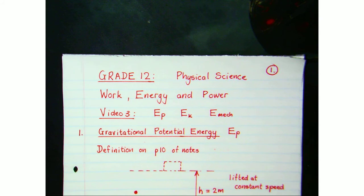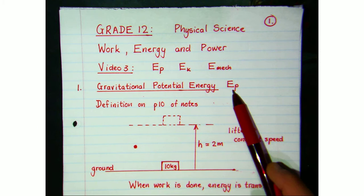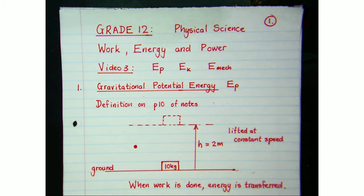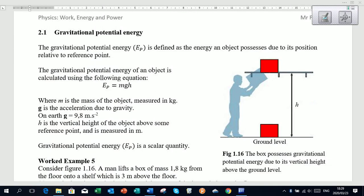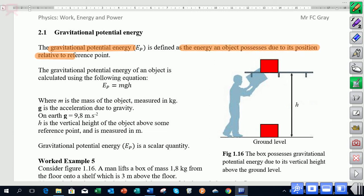Let's go straight into gravitational potential energy, given the symbol EP. Let's look at page 10 of our notes and find the definition. Gravitational potential energy is defined as the energy of an object due to its position relative to some reference point. Looking at figure 1.6, we'll see that the ground is often taken as our reference point.